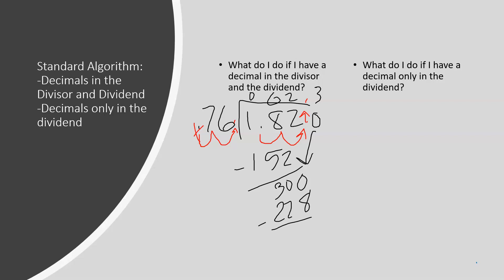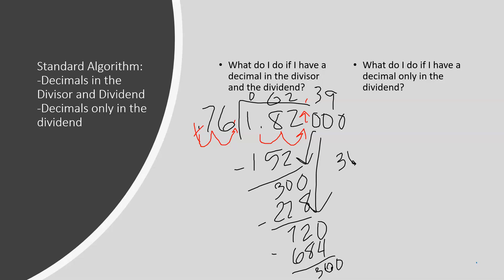That gives a difference of seventy-two. Add a zero and bring it down. Seventy-six will go into seven hundred and twenty nine times. Nine times seventy-six is 684, subtract to get a difference of 36. Add a zero, bring it down — that gives us 360. We've run out of room so we can move our 360 right here to finish dividing. After we divide this section we will be able to stop and round our answer.